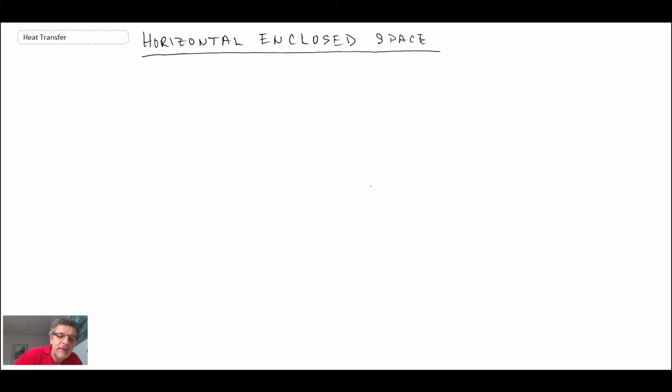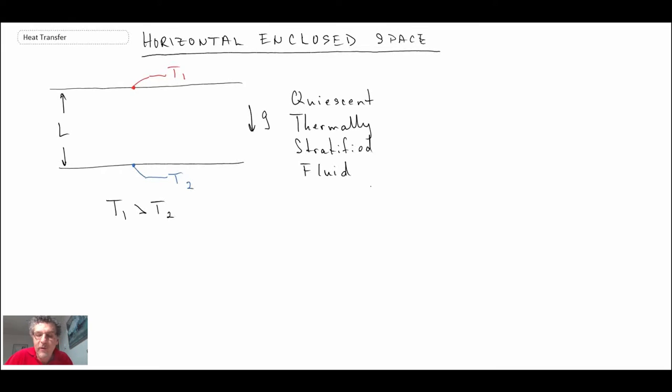We'll begin with the less interesting of the two where you have a stably stratified flow field. Here is a case where the upper surface is heated, so T1 is hotter than the lower surface which is cool. We have a quiescent thermally stratified fluid, meaning the fluid is not in motion. Temperature profiles would be constant horizontally at a given vertical position—as you move across horizontally the temperature would not change. The gravity vector is pointing in the downward direction.